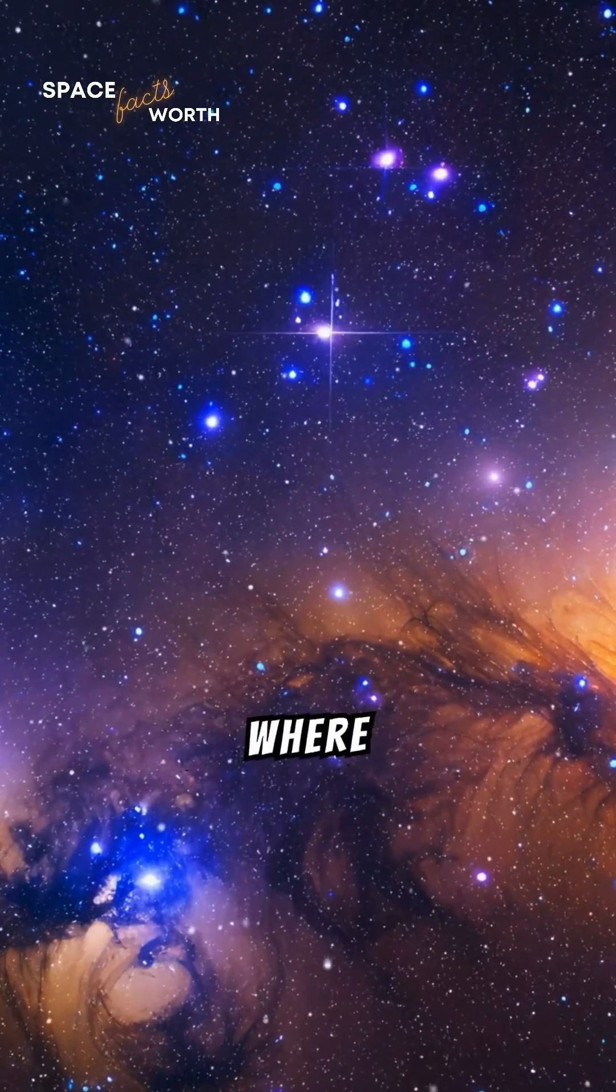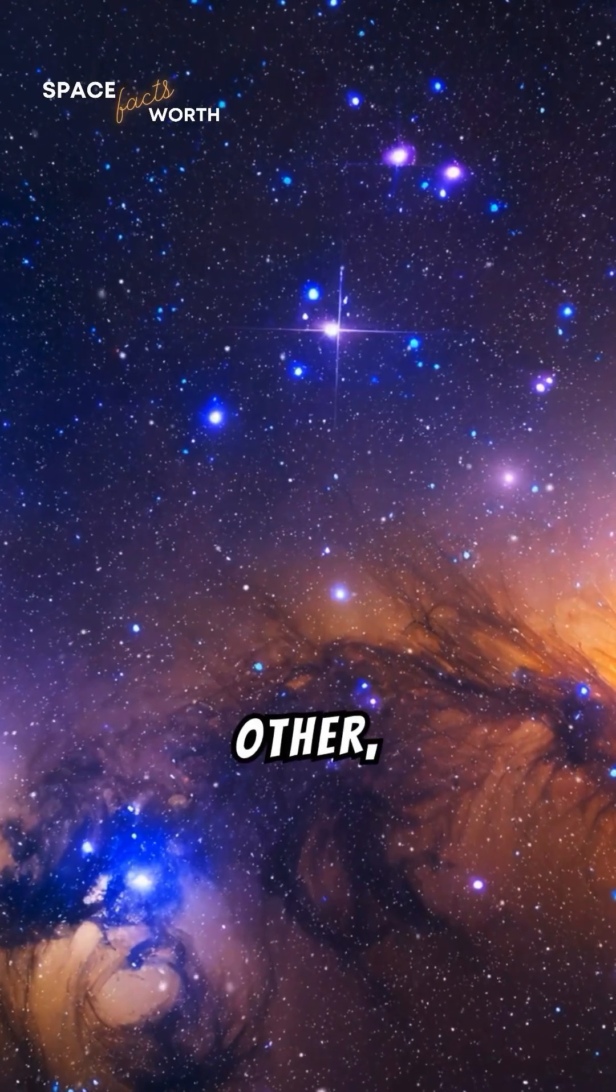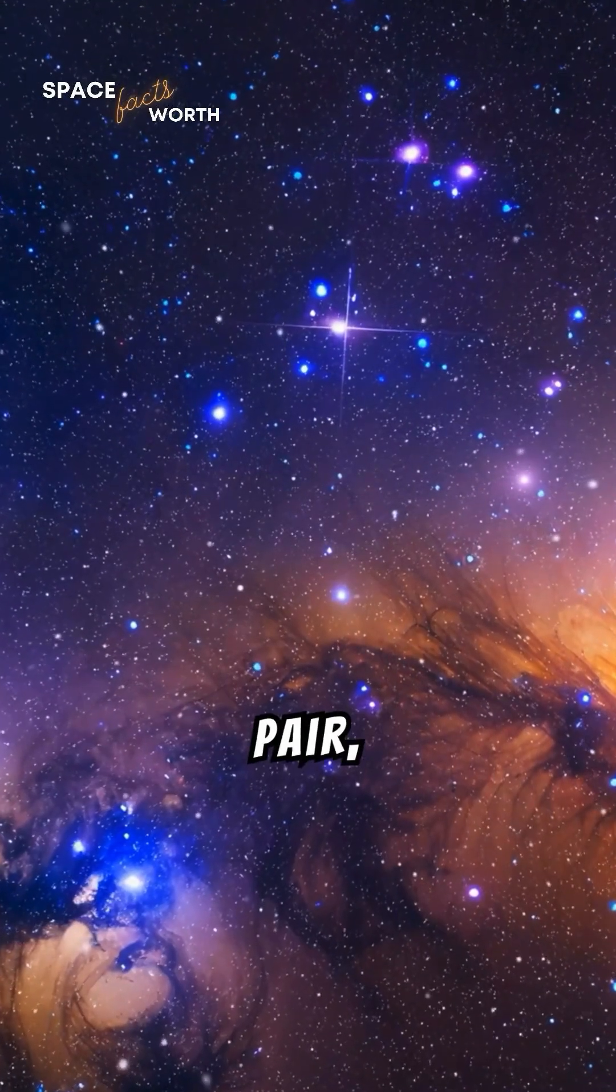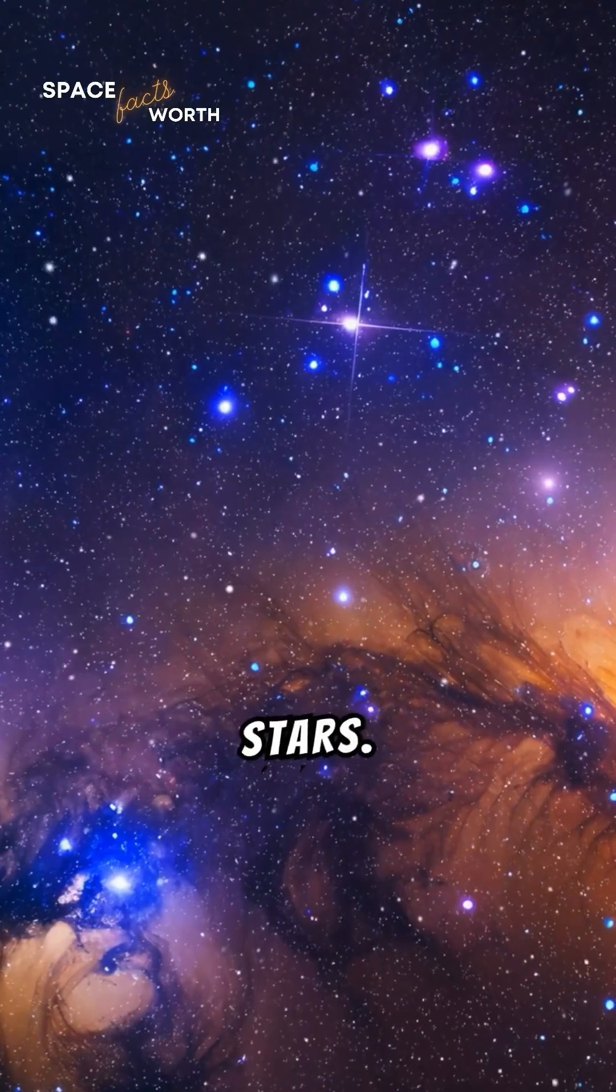These systems can be hierarchical, where a pair of stars orbits each other, with a third star orbiting the pair, or more complex structures involving additional stars.